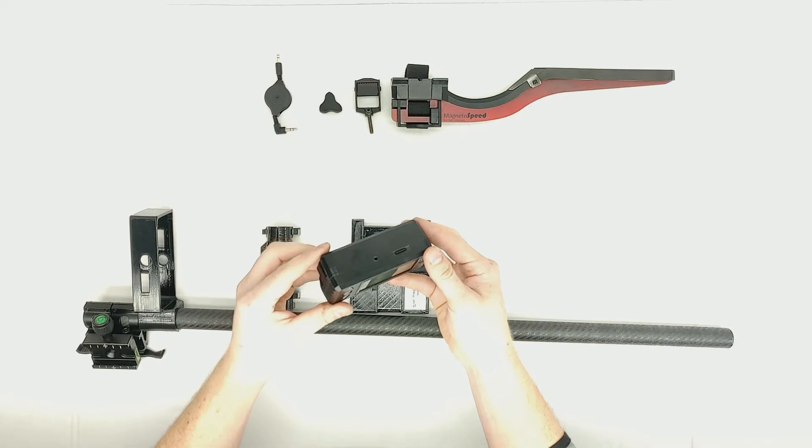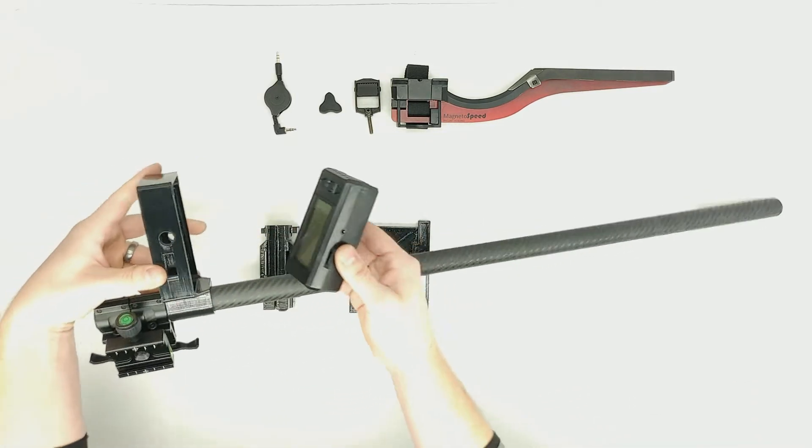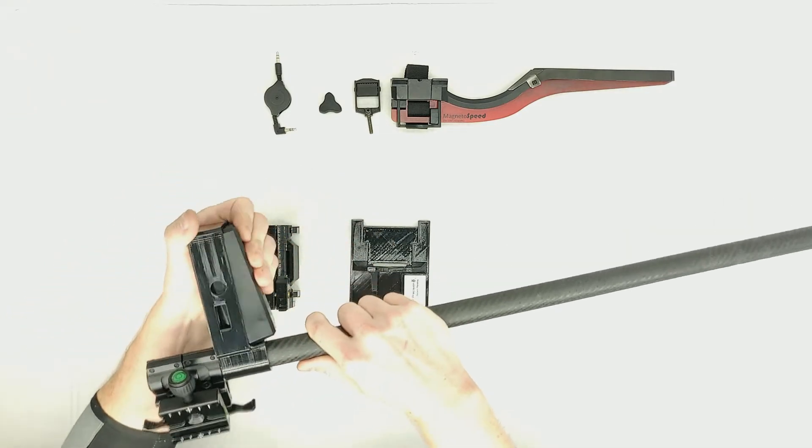Now, taking your V3 display and ensuring the headphone jack and SD card are facing upwards, you can push it into the holder. Once in it should be very secure.